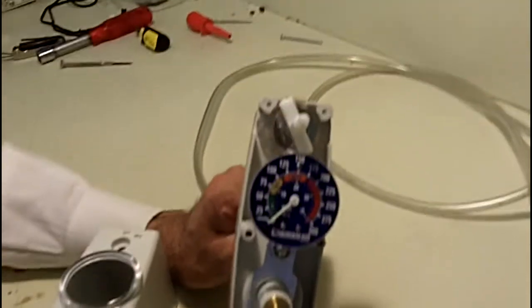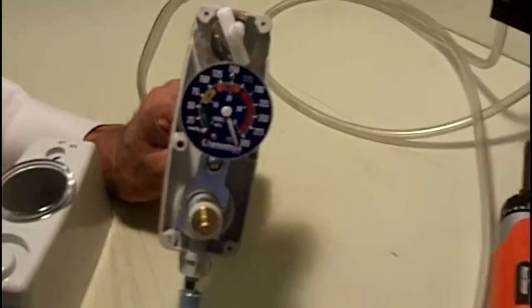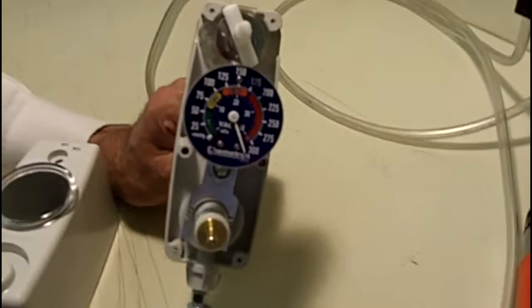And you'll notice when we turn the vacuum source on full and it's completely blocked off, you're going to see it's going over 300 millimeters of mercury.